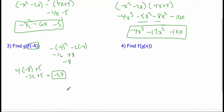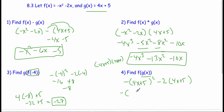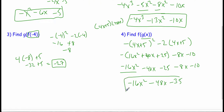Finding f of g of x: I use f's formula — negative x squared minus 2x — but wherever I see x I substitute g of x, which is 4x plus 5. So I need to square 4x plus 5: that's 4x plus 5 times 4x plus 5, giving 16x squared plus 40x plus 25. Then distribute the negative: negative 16x squared minus 40x minus 25, minus 8x minus 10. No other x squared terms, so the result is negative 16x squared minus 48x minus 35.